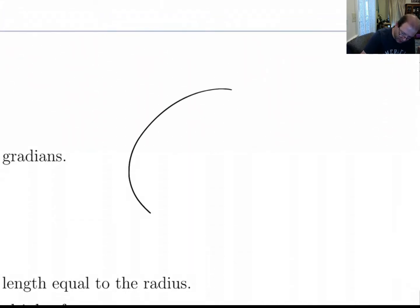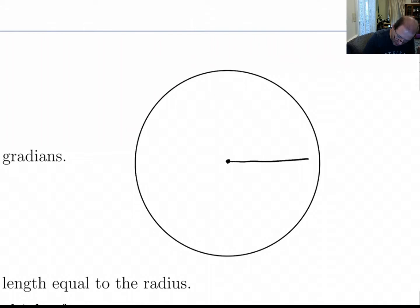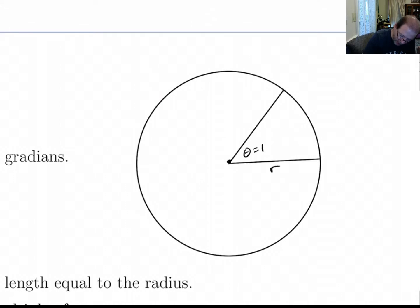Let me draw a picture. If you take a circle and you draw an angle, a central angle, of one radian—I'm going to just eyeball this, that's about one radian—if you do that, then both of these are the radius of the circle. Well, if that angle is exactly one radian, then the length of that arc there between those two lines is going to be exactly the same as the radius. And that's how radians are defined.